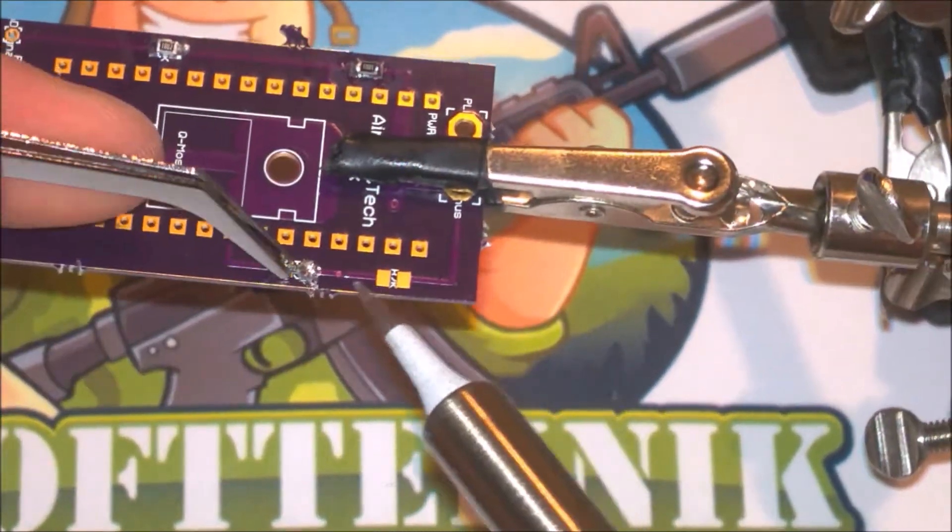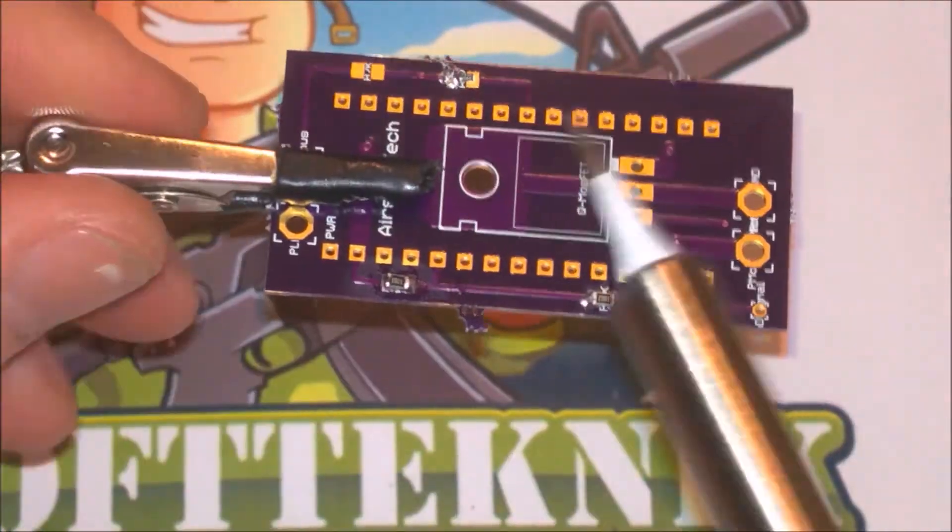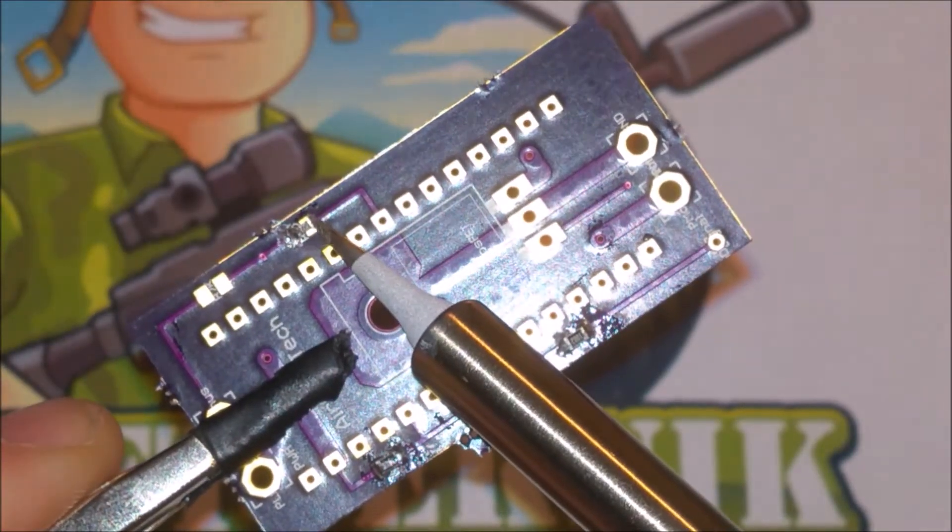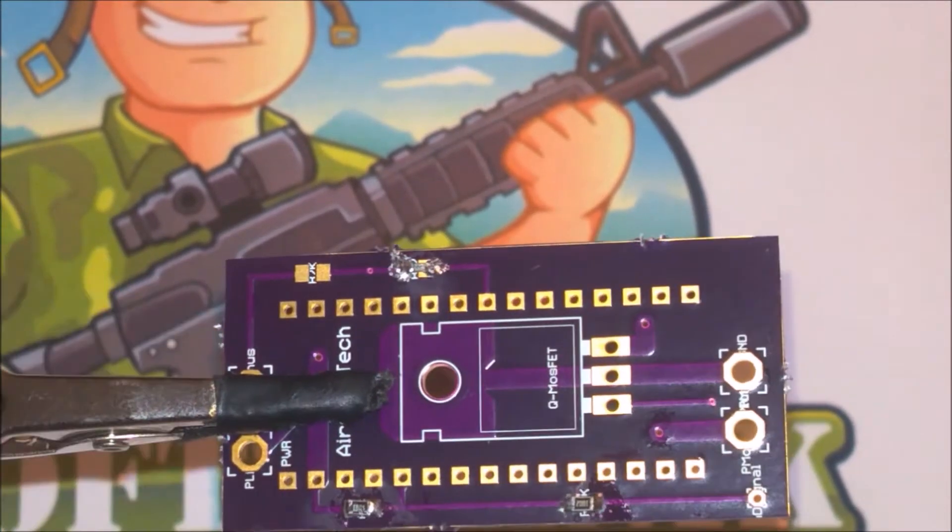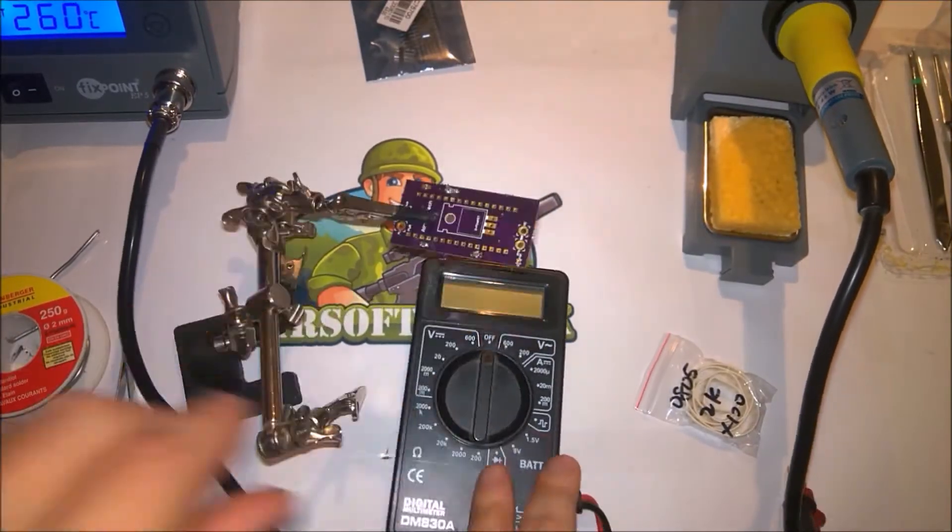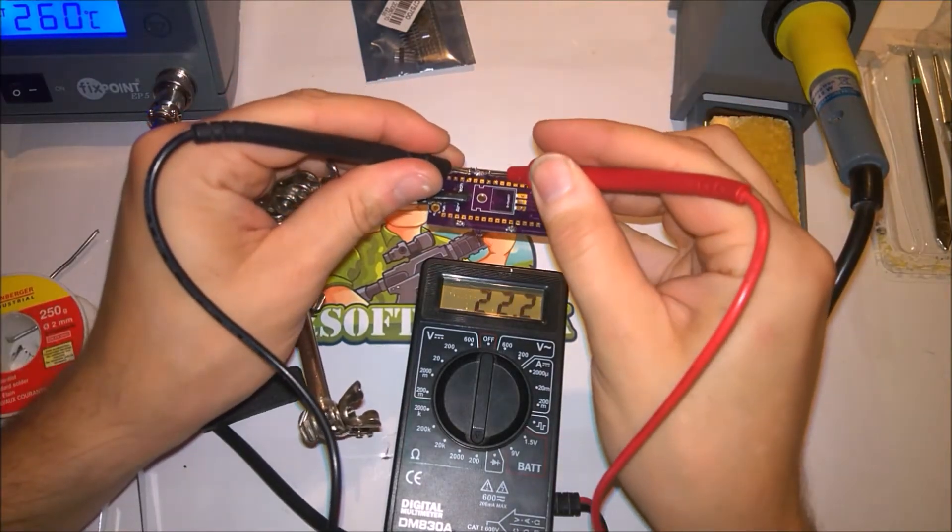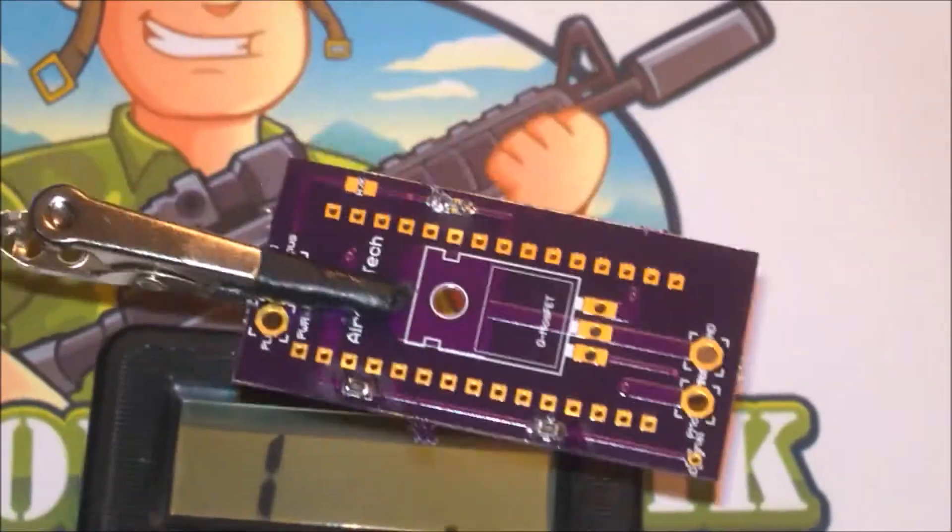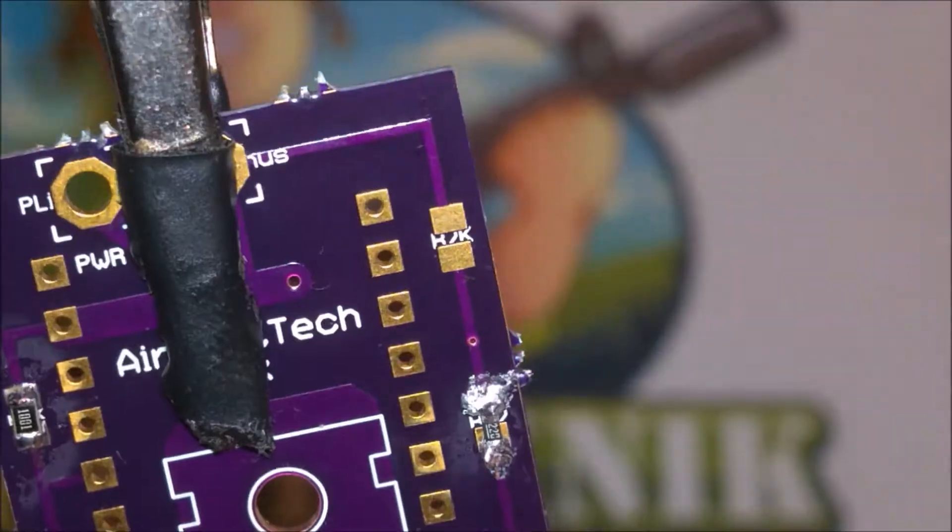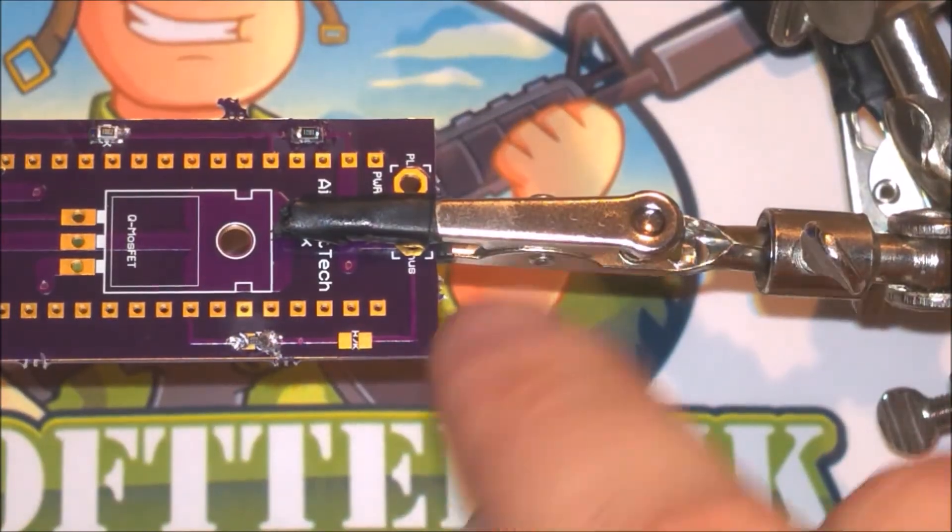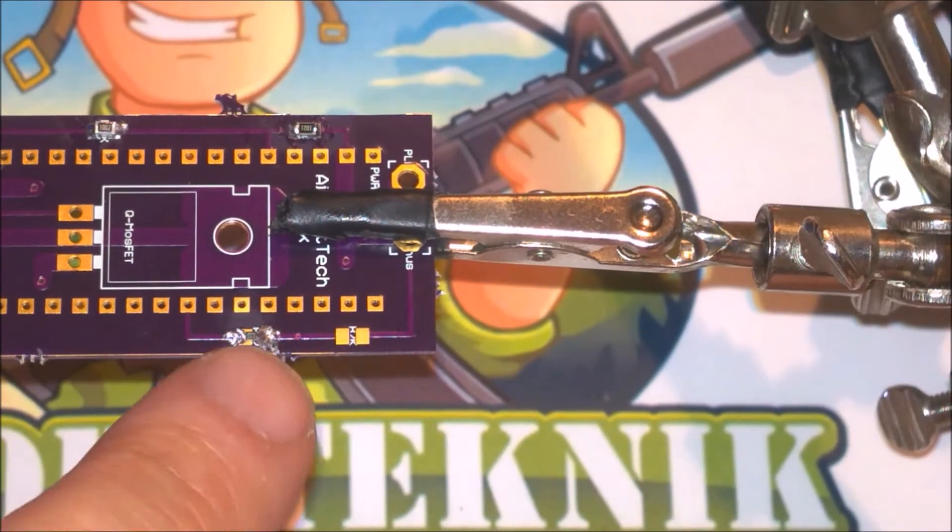Here I am soldering on a 22 ohm resistor but it is really not needed because it is there just to protect the gate on the MOSFET. But as we are controlling the gate using a microcontroller we should not have any inrush current that can damage the MOSFET, so you could just replace it with a small piece of wire.